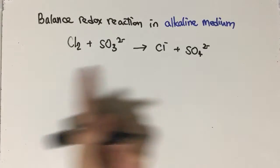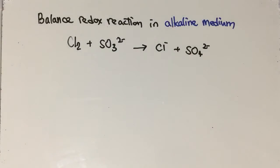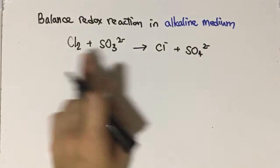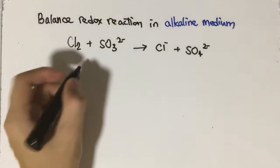Firstly, if you use the ionic half-equation method, we are going to separate this equation into two different ionic half-equations. The first one will start from chlorine molecule becoming chloride ion.